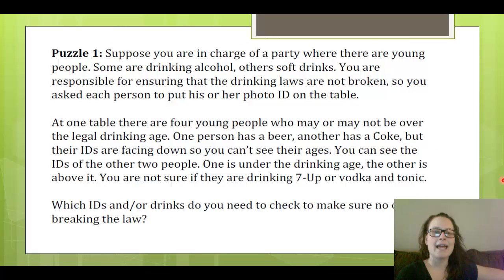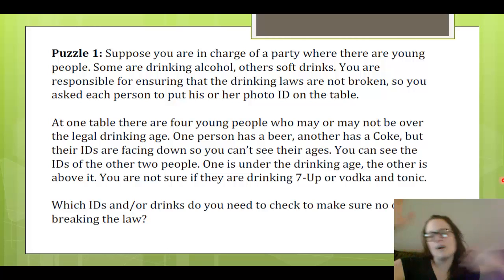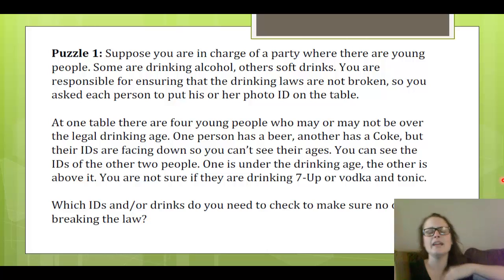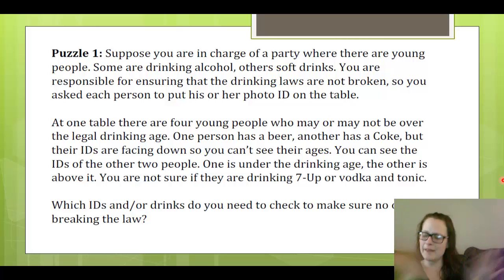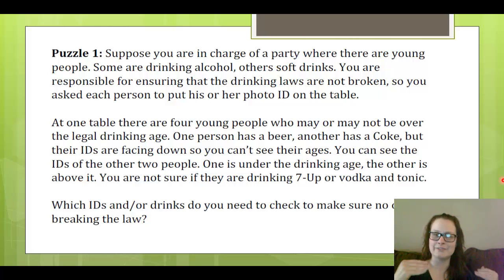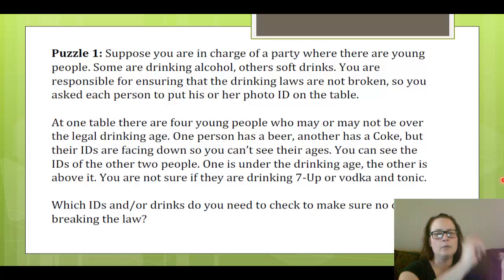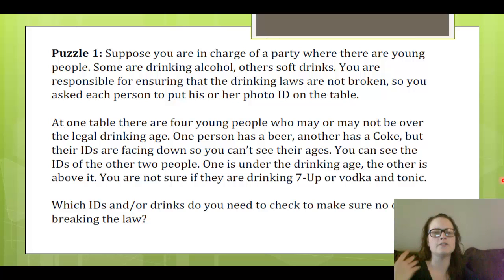So the idea is you're having a party and you're in charge. Suppose you're in some college town, so you've got all ranges of ages — freshmen up to grad students and non-traditional students. The ages vary and it's really hard to tell who's what age. You've got a big party, so you want to be really efficient in checking the rules and making sure no laws are broken. The legal drinking age is 18, and you come upon a table with four people. One person has a beer, one has a Coke, and a couple have some mysterious clear liquid. You need to figure out which IDs and which drinks you need to check.